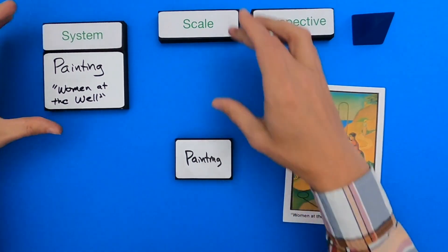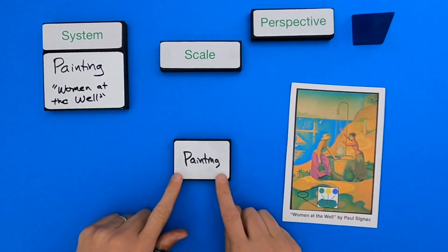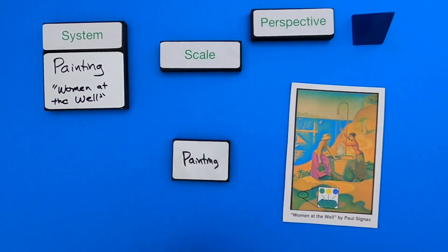So I've placed this underneath scale. So at what scale we're looking at, we're looking at the scale of the painting itself. Now I'm going to go vertically here and show you the different hierarchy that we have above and below that painting.